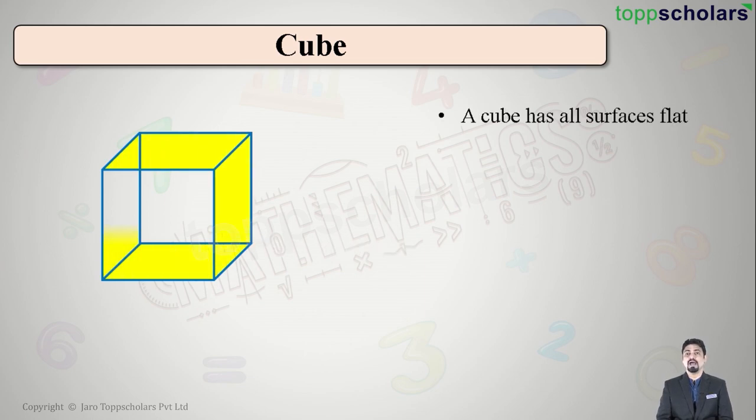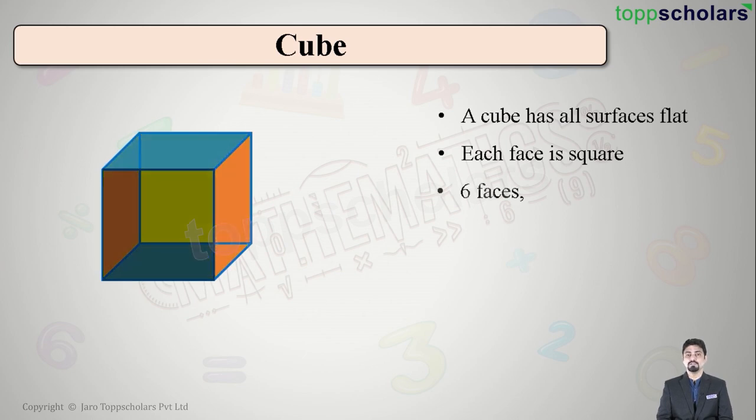Now a cube has all surfaces flat, correct? And each face is an exact square. How many faces? One, two, three, four, back and a front. That is six faces.